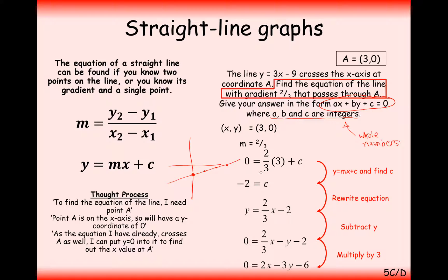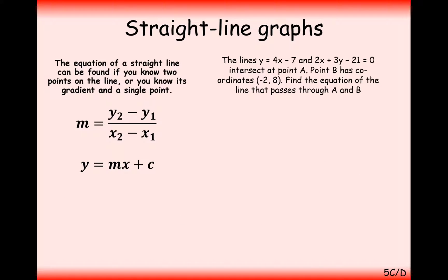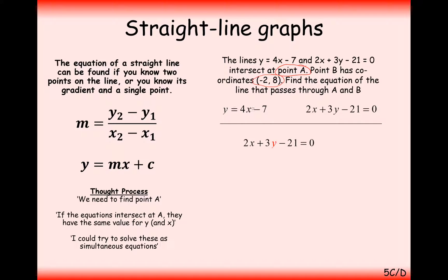A lot of work there — we had to break down the question and work through each part independently. Next, a similar type of question: the lines y equals 4x minus 7 and 2x plus 3y minus 21 equals 0 intersect at point A, and point B is at a given coordinate. Find the equation of the line through AB. We've seen how to find intersections using simultaneous equations — elimination or substitution.